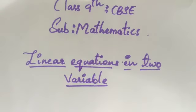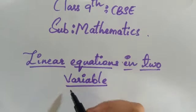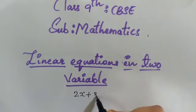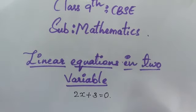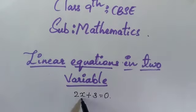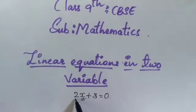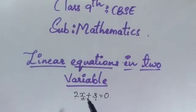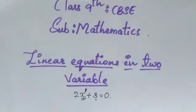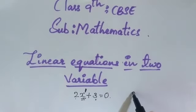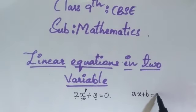Hello everyone. Today under mathematics we are going to study about linear equations in two variables. A linear equation is an equation with degree 1. For example, 2x plus 3 equals 0 is a linear equation because the degree of x is 1. In general form, a linear equation in one variable is written as ax plus b equals 0, where only one variable x is present.